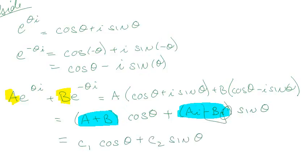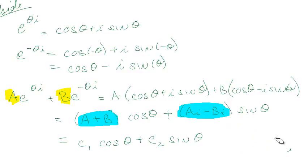You might ask: but this had i's in it — don't the i's matter? Not really, because they're just arbitrary coefficients. So instead of getting c2 = 6, before I would have had a = 10/i and b = 4/i. If I multiply them by i and subtract, I still would have gotten 6. So they're still just arbitrary constants, just a little bit easier.